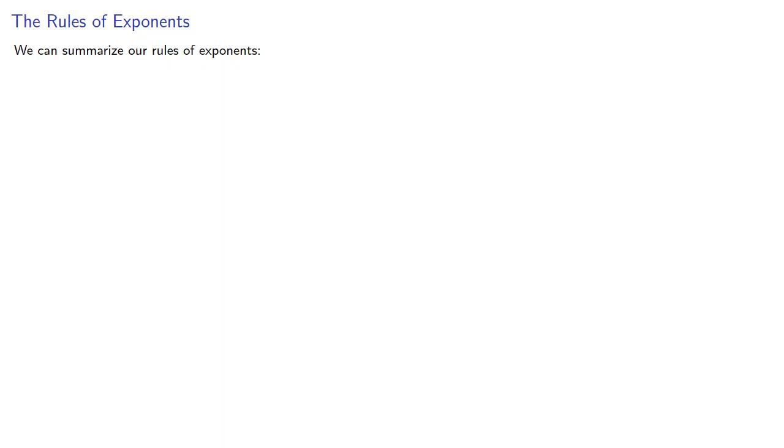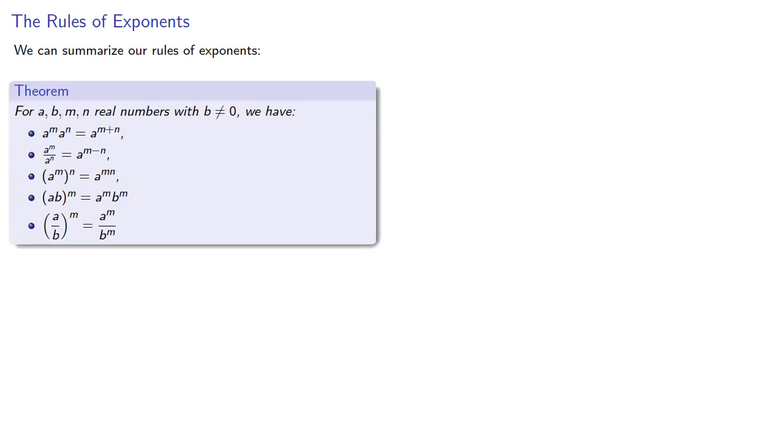We can summarize our rules of exponents. We also agree to the convention that as long as a is not equal to zero, a to the power negative n is one over a to the nth, and a to the zeroth power is equal to one. This should allow us to simplify all exponential expressions.